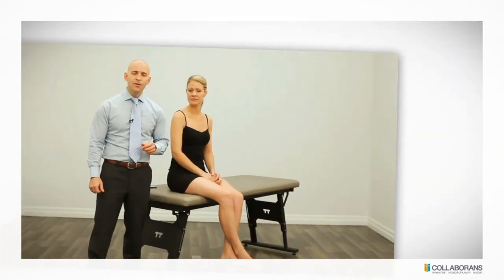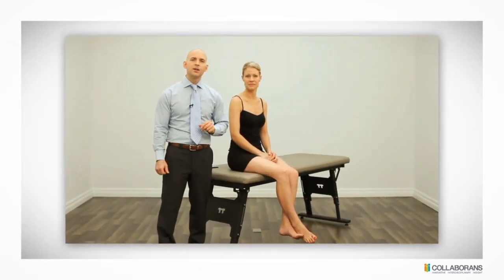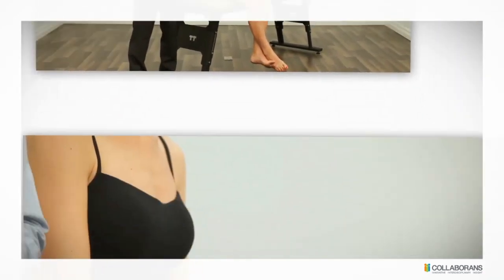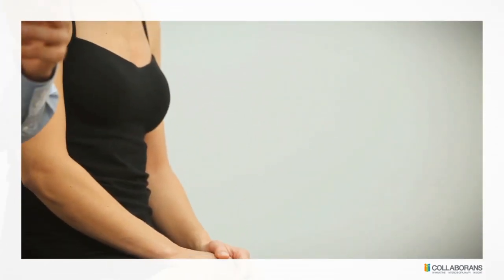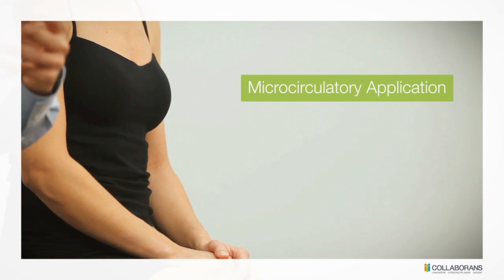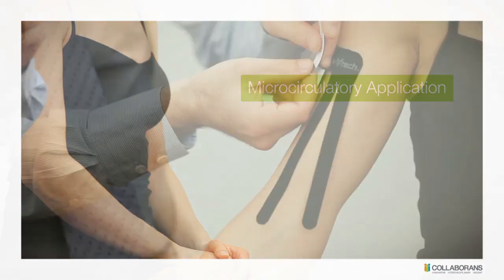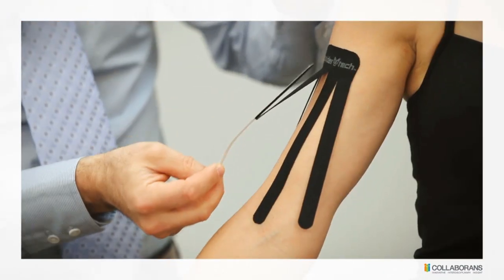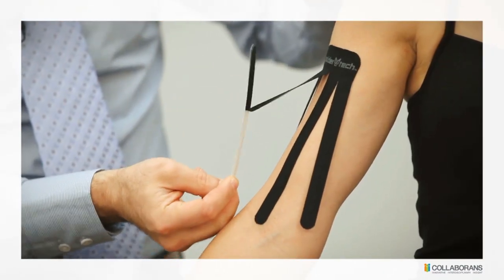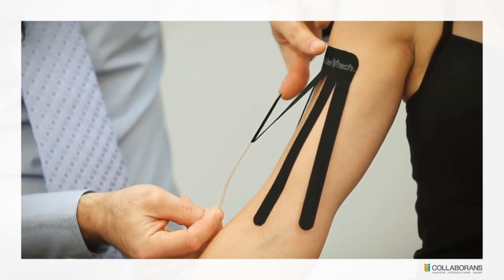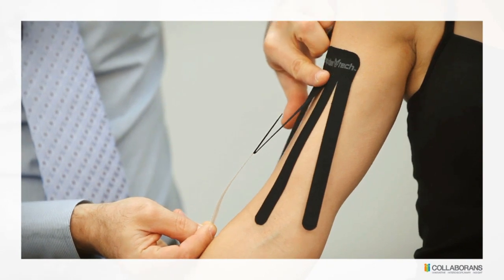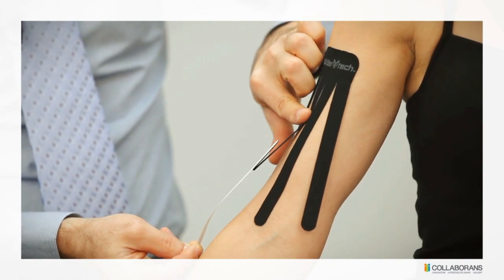We've identified three main categories of action. The first category would be micro circulatory. A micro circulatory effect is where you're using the tape to try to improve swelling, edema or bruising.